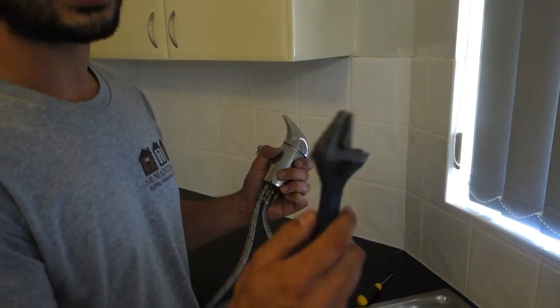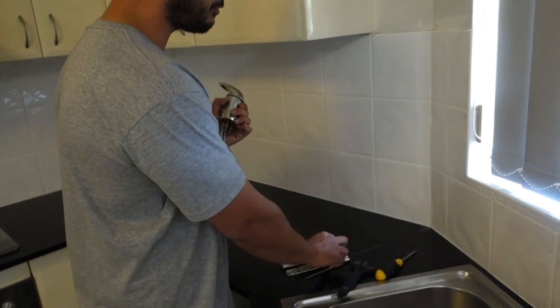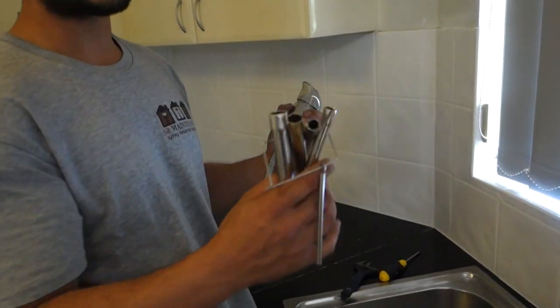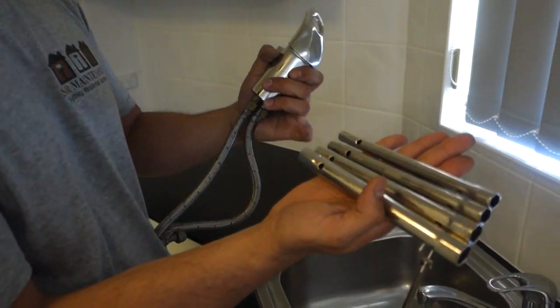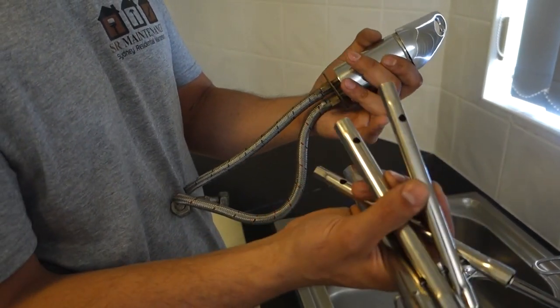Obviously under the sink there's very limited room so to get an adjustable wrench in there isn't very convenient or comfortable. So what I like to use is a set of tube spanners. These ones here are very cheap to get your hands on and these ones here have a whole range of different sizes.